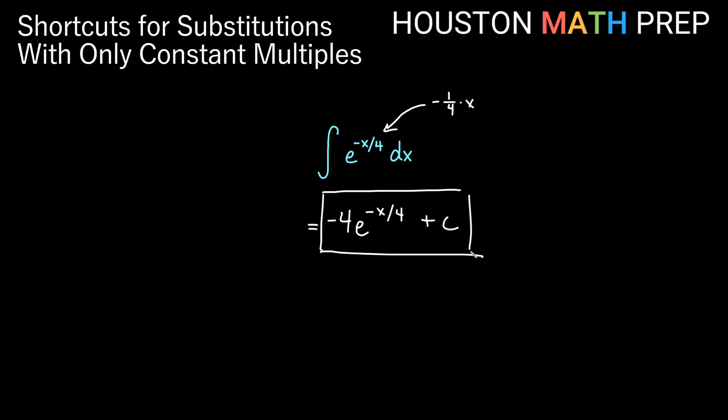But moving forward from this point in our integration series, the rest of these we will just go ahead and use this multiply by reciprocal rule out front whenever our u-sub would only be for a constant multiple.